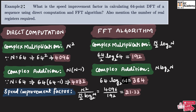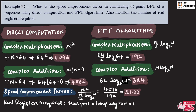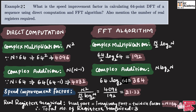Now let us find the real registers required. The registers needed for the real part, the imaginary part, and the twiddle factor are each n, which equals 64. Therefore, the total number of registers required is 3n = 3 × 64 = 192. So the total number of registers required for computing the 64-point DFT using FFT is 192.